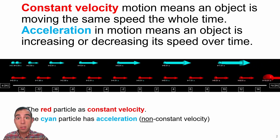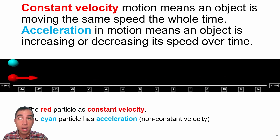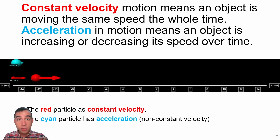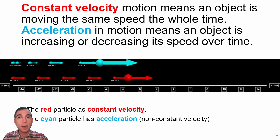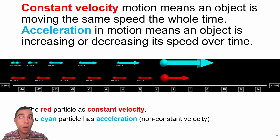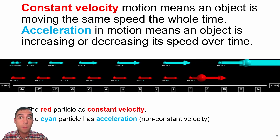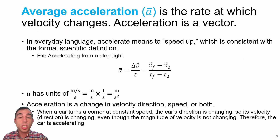In this motion map, you can see one of the objects, the red object, has a constant velocity to the right—the size of its velocity arrow never changes at any of the timestamps. The cyan particle on top has an acceleration: it starts off with no speed, and then its speed gradually increases throughout the motion until it catches up with the red particle and passes it. Much like the velocity was the change in position over a change in time, the acceleration is a change in velocity over a change in time.